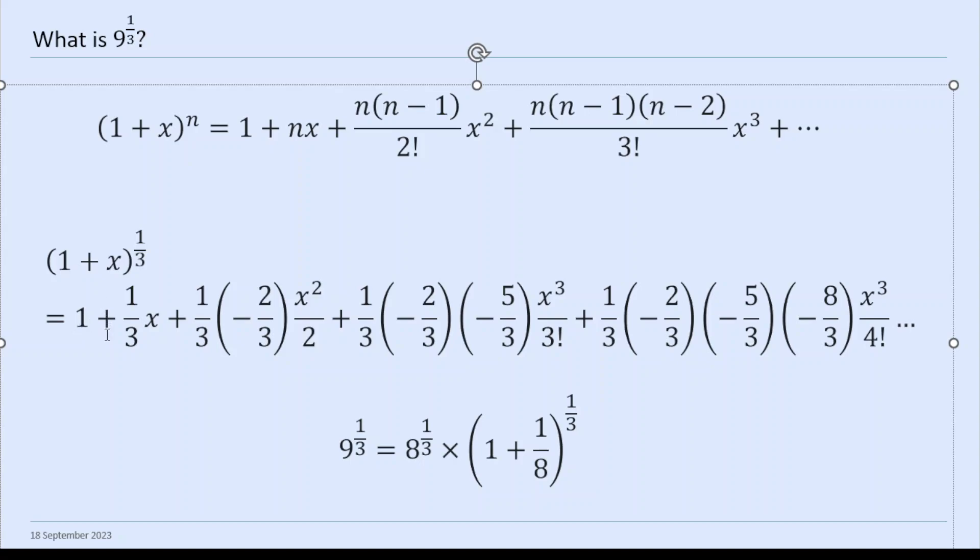So firstly, we put in n as 1 third. So we get 1 + nx + n(n-1)x^2/2 factorial - we'll just put in the factorial, but it is the same because 2 factorial is 2 - plus n(n-1)(n-2)x^3/3 factorial. And so on. This should be x^4 over 4 factorial. So x cubed over 3 factorial plus n, n minus 1, n minus 2, n minus 3, x^4 over 4 factorial.